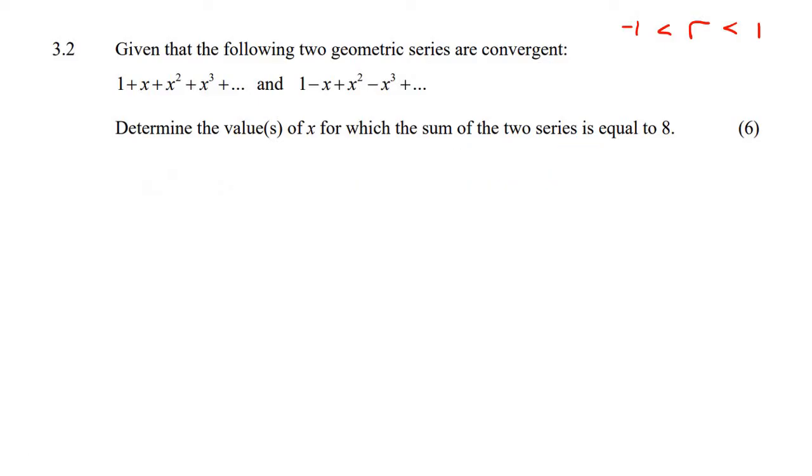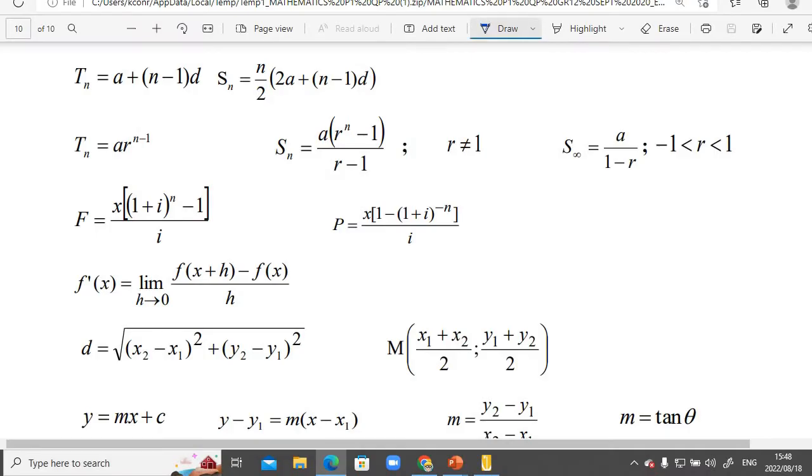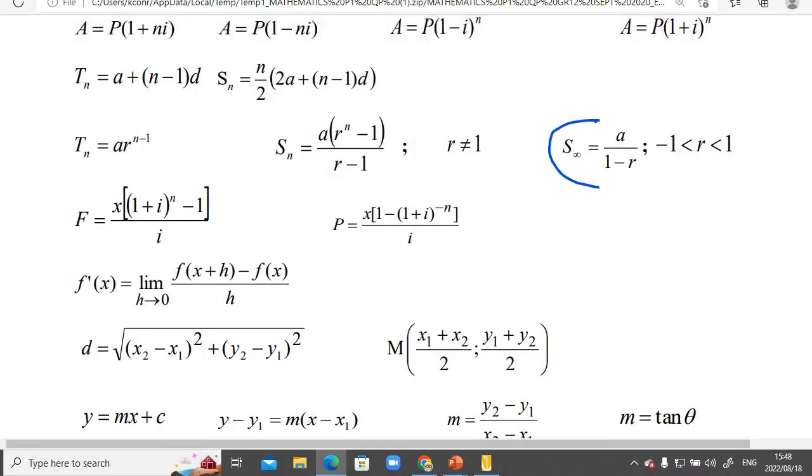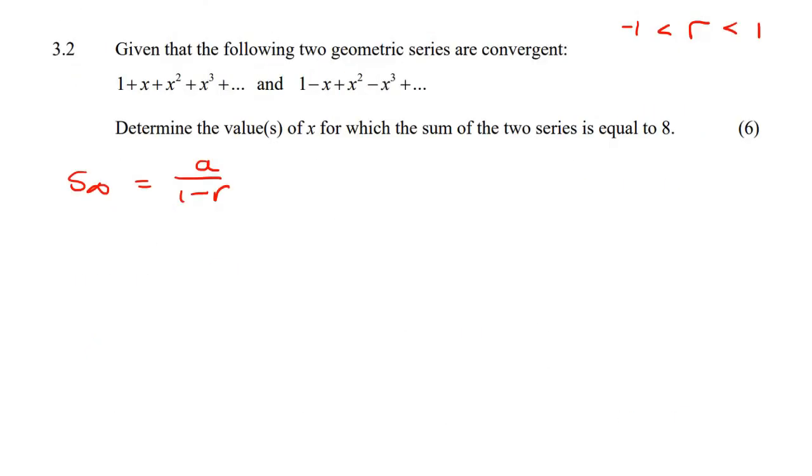So what else we can do is that we know that this here is convergent. They said it's convergent. So to work out the sum of this, we don't know how many terms there are, but because it's convergent, we can put it into the sum of infinity formula. So what you can see here on the formula sheet is that whenever your ratio is somewhere between minus 1 and 1, you can use the sum to infinity formula.